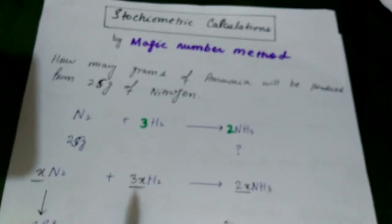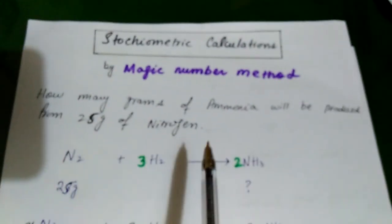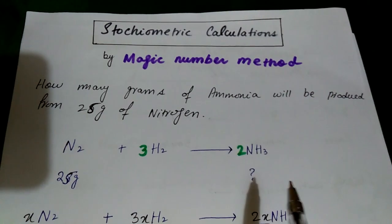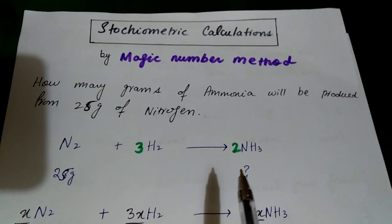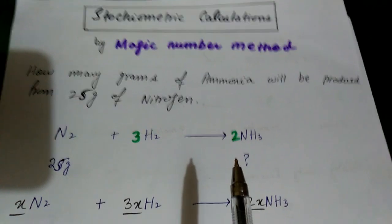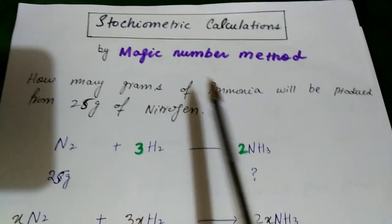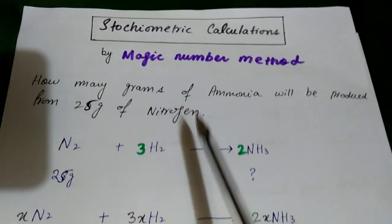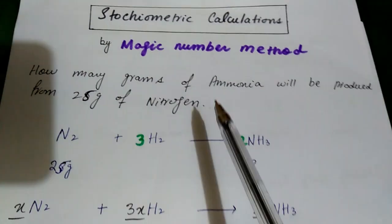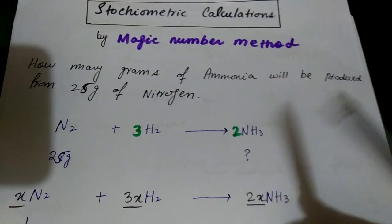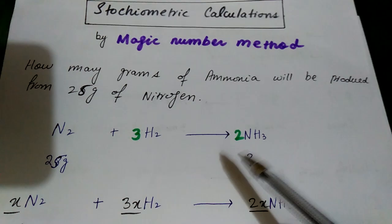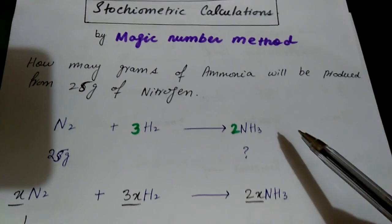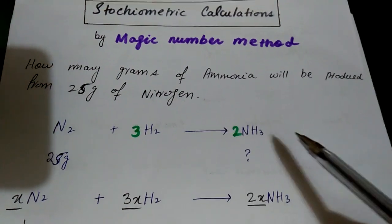Hello, my name is Fatma and today we will discuss stoichiometric calculations which come in MCQ form. We will find a very simple and convenient trick which we call the magic number method. We have to find a magic number and it will help us find out the number of grams or the number of moles.